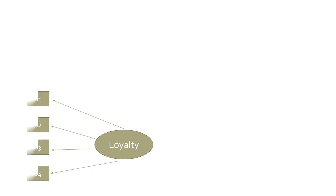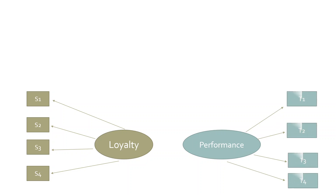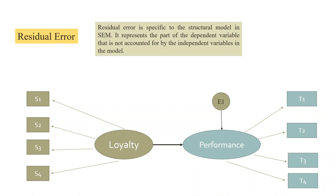If loyalty is captured with S1, S2, S3, S4 and performance with T1, T2, T3, T4, and we want to understand the effect of loyalty on the performance of the employee, the overall error in the model is represented by E1 — this is known as residual error. Residual error is specific to the structural model in SEM and represents the part of the dependent variable not accounted for by the independent variable in the model — in other words, the unexplained component of performance is E1.